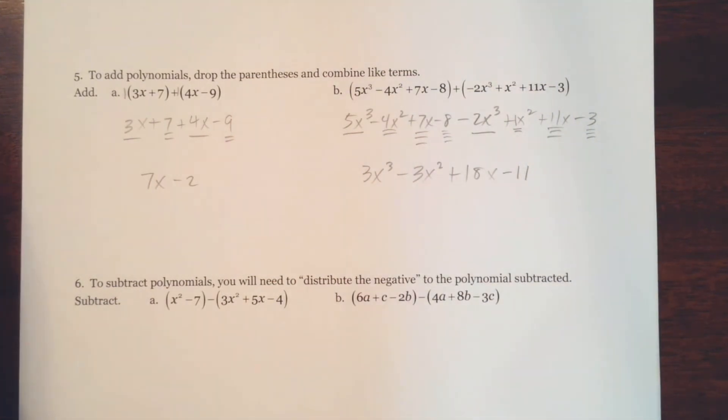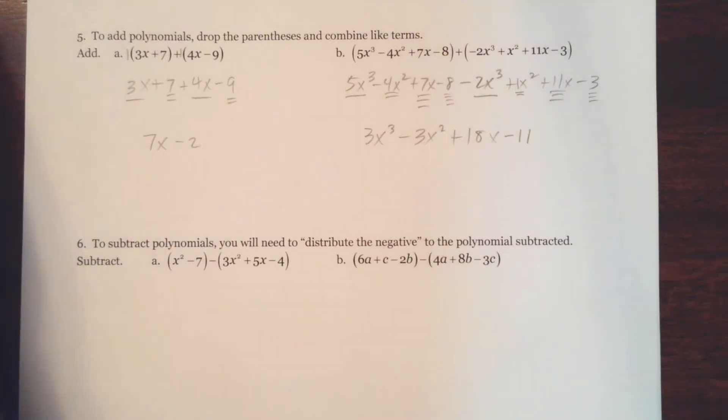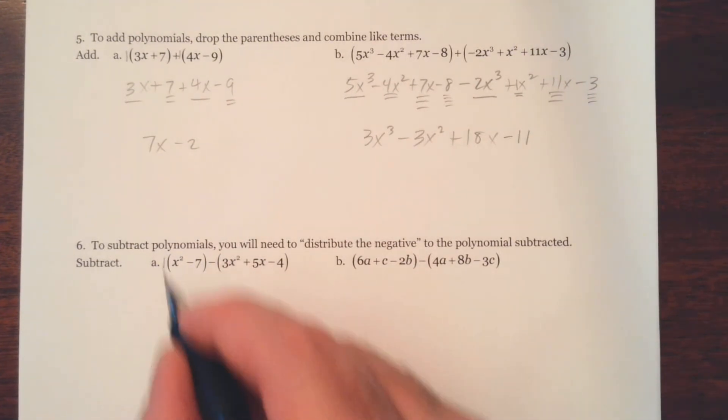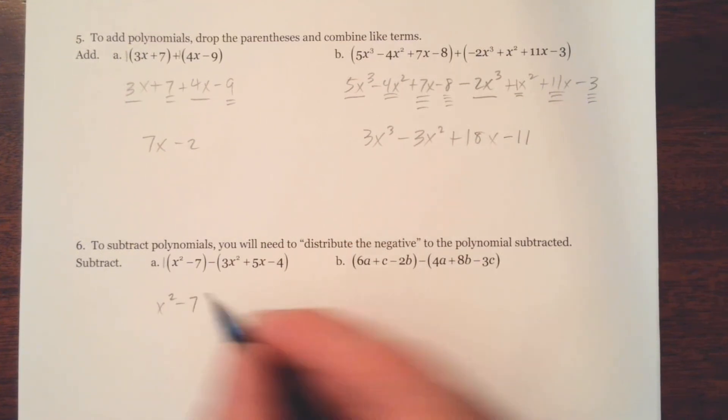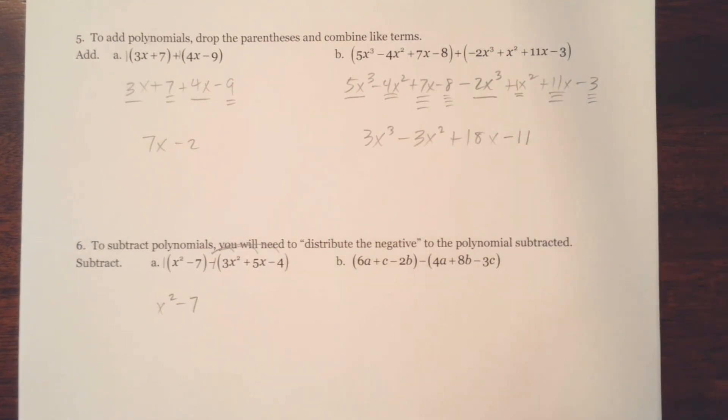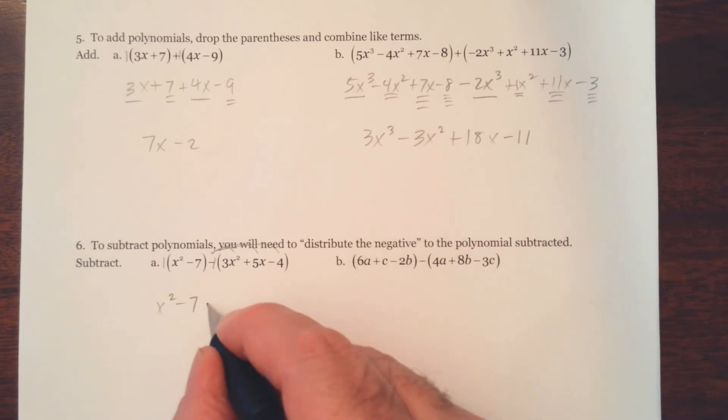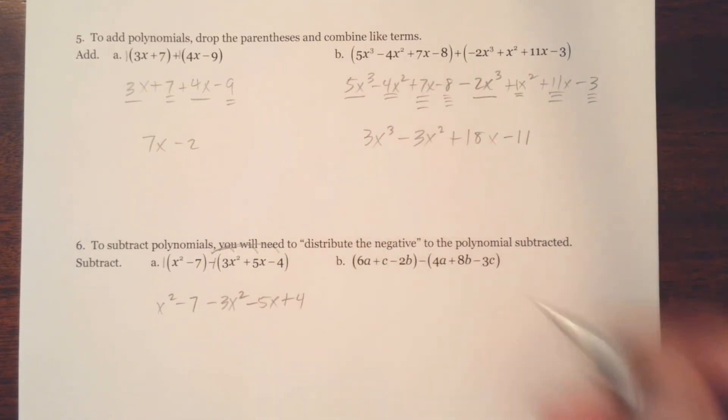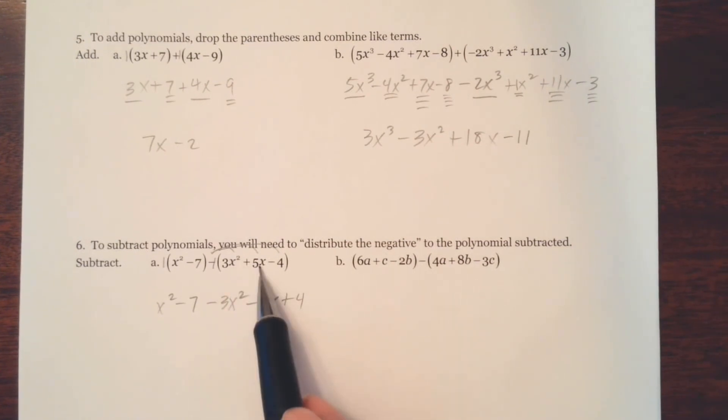Alright. Let's look at number 6. Alright, so... And again, we've done this before. It says to subtract polynomials, you will need to distribute the negative to the polynomial subtracted. So again, this is a 1. So we can drop the parentheses on the first binomial here. But when we're subtracting this binomial here, we're going to have to distribute a negative. And what happens is each of our terms inside the parentheses will change signs. Negative 1 times 3x squared is negative 3x squared. We'll write minus 3x squared. Negative 1 times 5x is negative 5x. Or minus 5x. Negative 1 times negative 4 is positive 4. And we'll write plus 4. But again, you can see each of the terms inside the parentheses have changed signs.